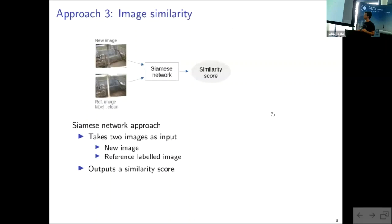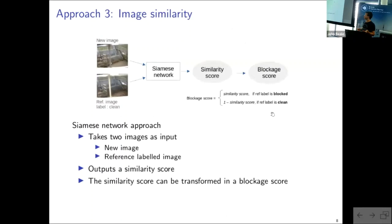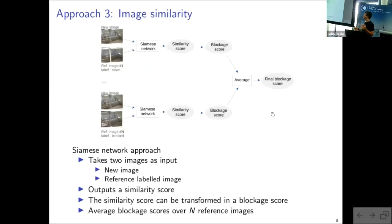For the Siamese network, here the process is a bit different. So we have a new image for which we want to know the label. And we also have a reference image that we have labeled from the same camera. And the Siamese network, which is shown here, outputs a similarity score between the two images. And so, if we know that the label of the reference image is clean, for example, and the two images are similar, it means that the new image looks clean and inversely. And so what's interesting with this is that we can use more than one image, and then we can make an average of all of these scores to obtain a more accurate blockage score for a given image.